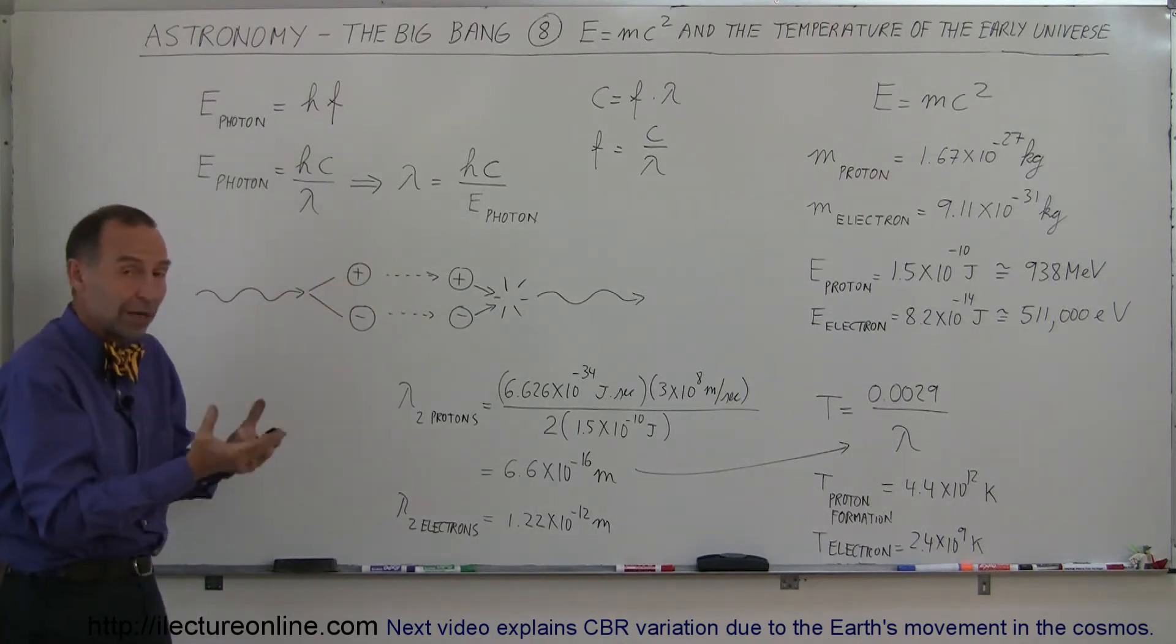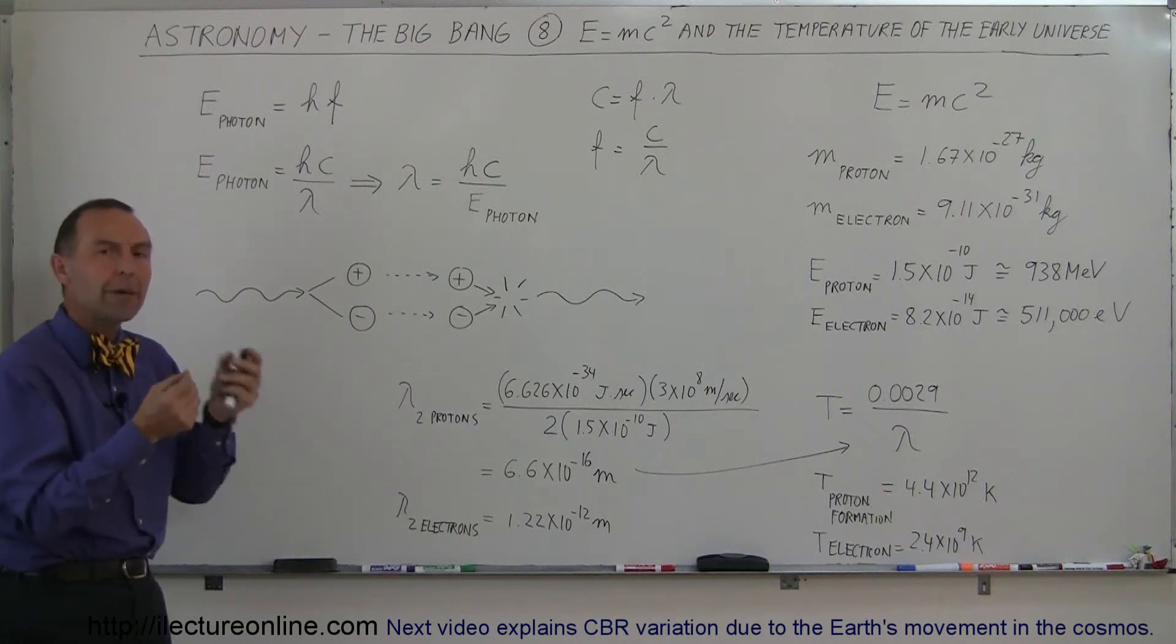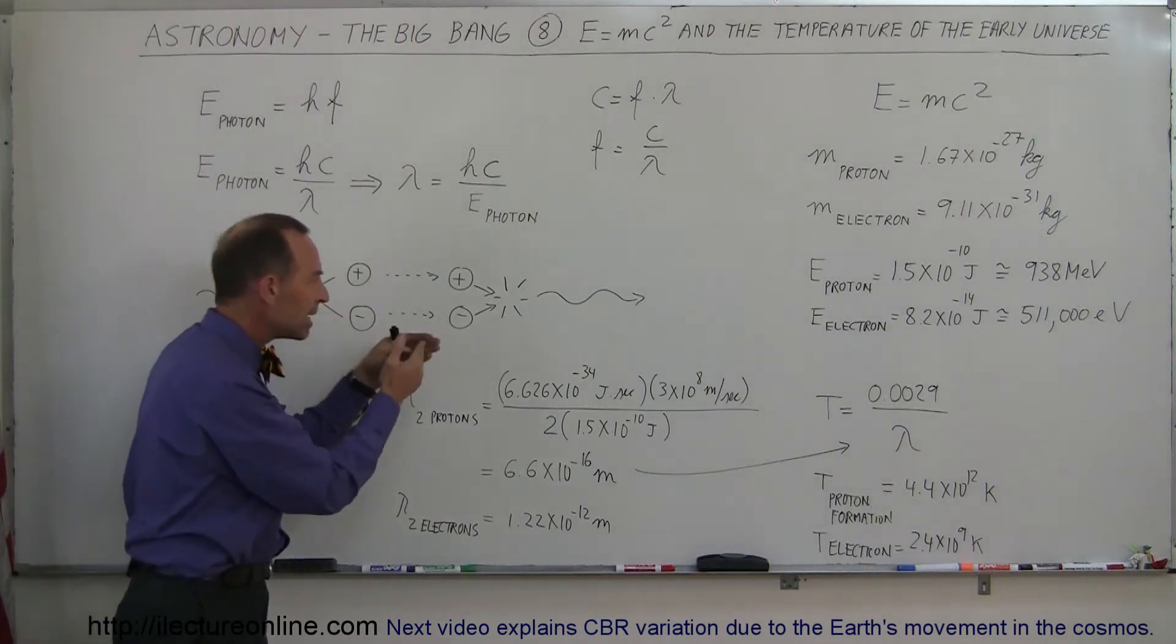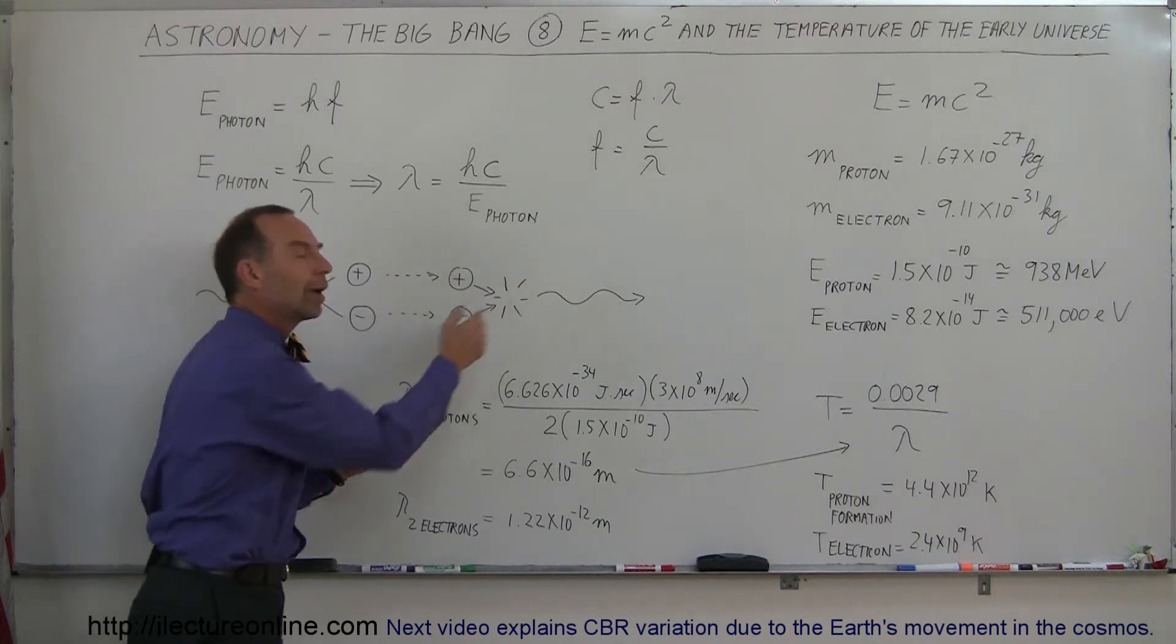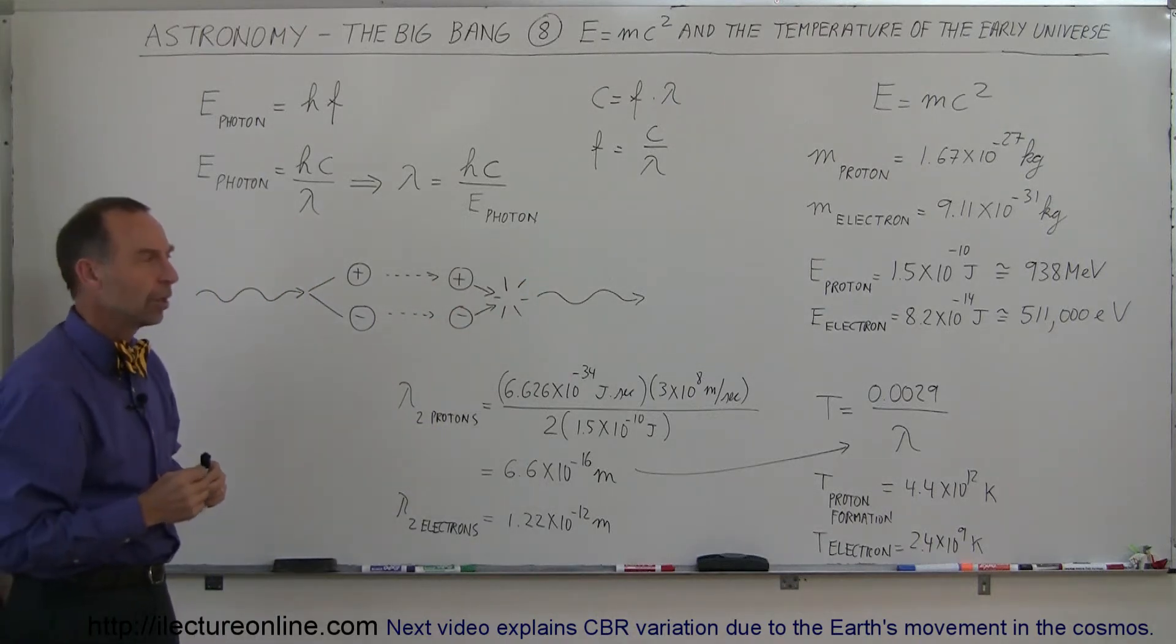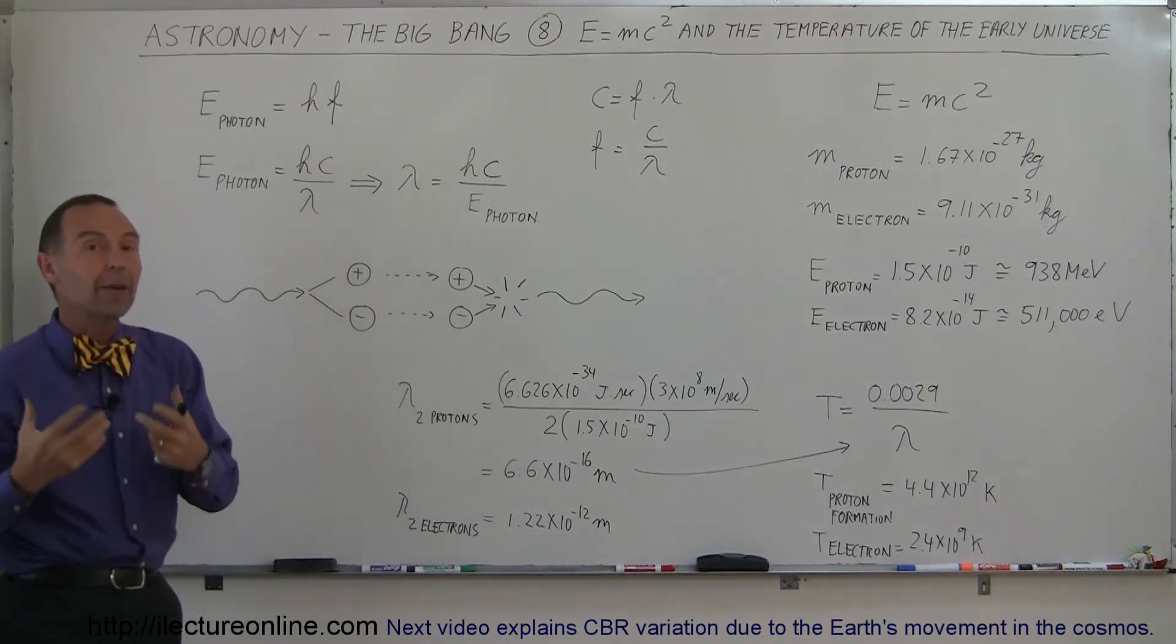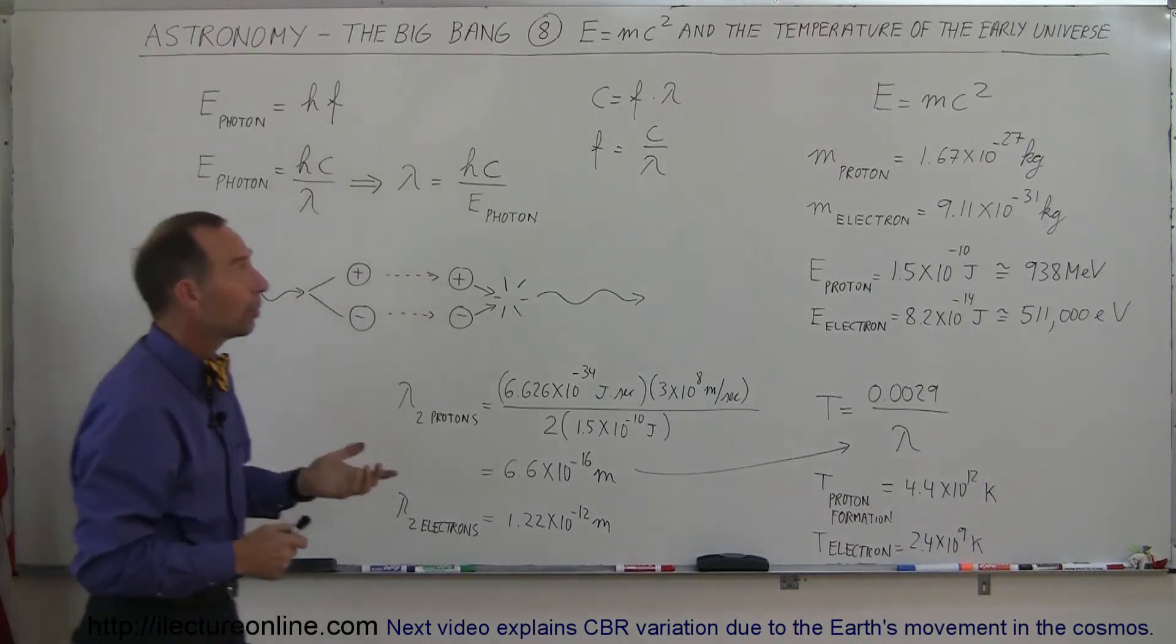We discovered that whenever mass is created from energy, it usually does that in pairs, a particle and an antiparticle. And when a particle and an antiparticle meet, they annihilate each other and turn right back into pure energy. So since we know how much mass particles have, we can figure out how much energy is required to make those particles.